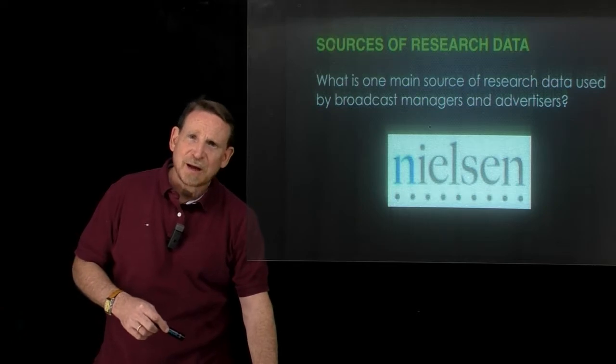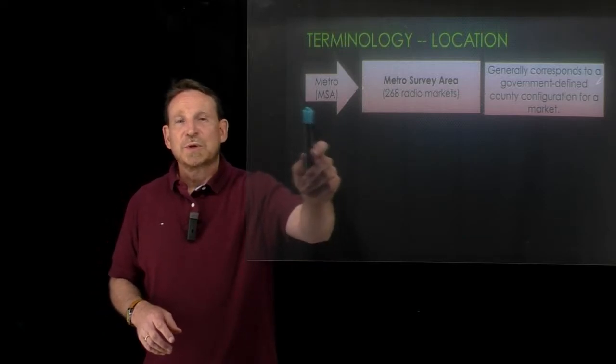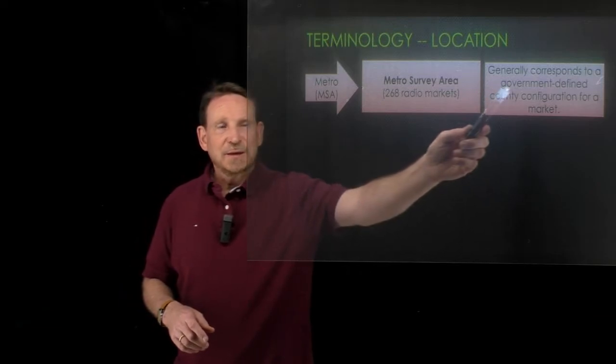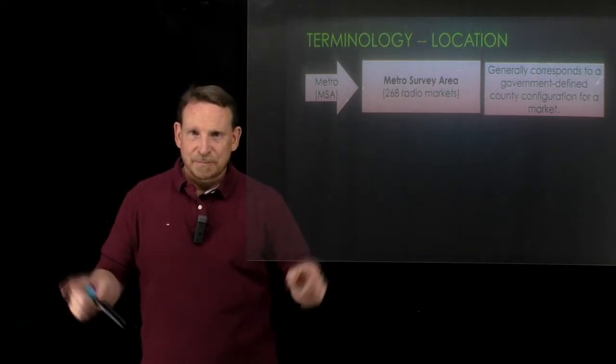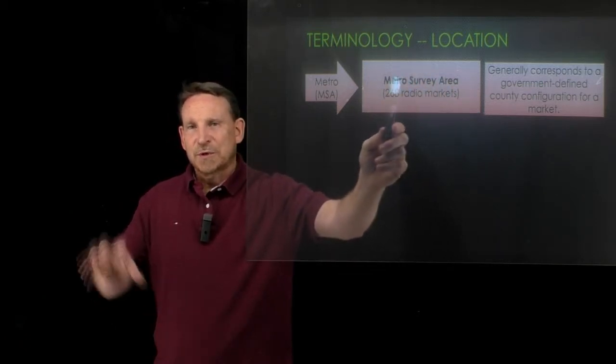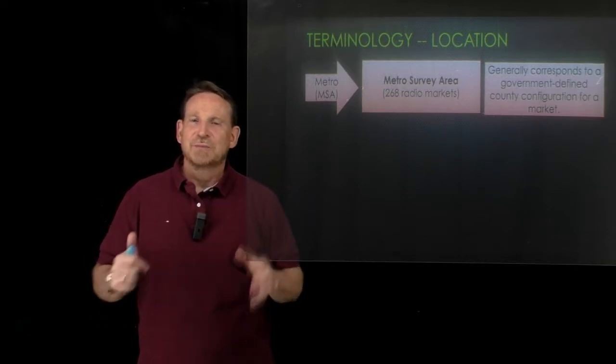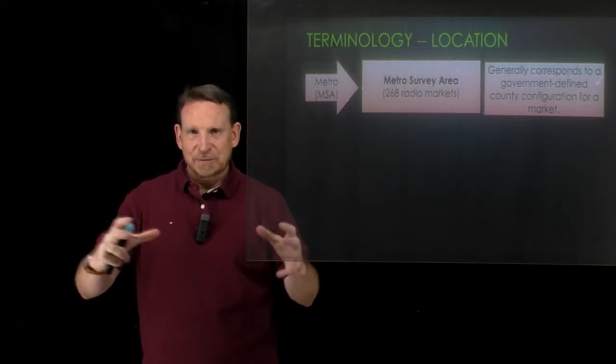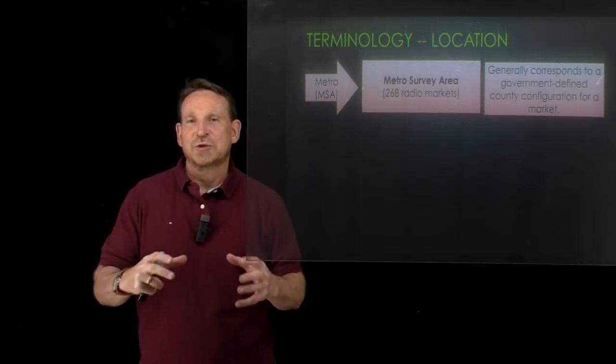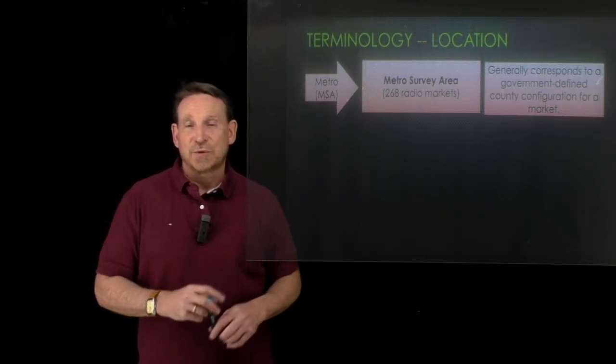Let's take a look at the kinds of areas they've designed in order to collect this data. So the first one we'll look at is focused on radio. It's the metro survey area. This is based on government designed markings, boundaries. When you break up the United States, we get 268 of these markets. What's important here, it's a defined area by government that has a concentration of population in the middle of it. So for us, Orlando would be the metro survey area.